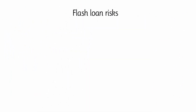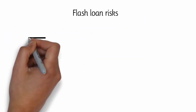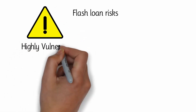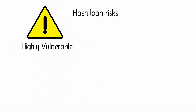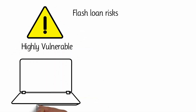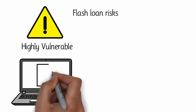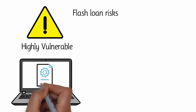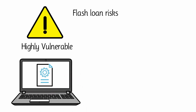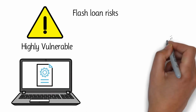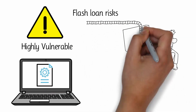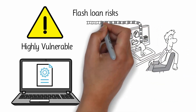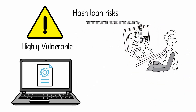Flash Loan Risks. One major issue with flash loans is that they tend to be highly vulnerable due to their complexity. All flash loans are automated with the help of smart contracts, but not all smart contracts are coded correctly. As a result, a simple mistake grants a hacker the window of opportunity to exploit the flash loan and drain funds from a project's liquidity pools.